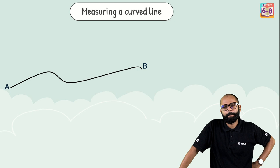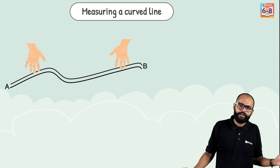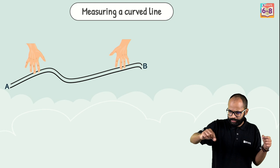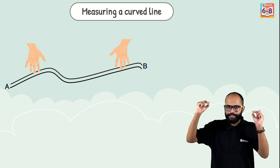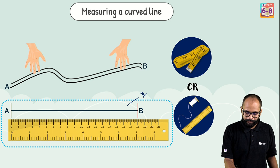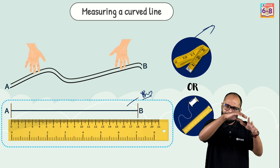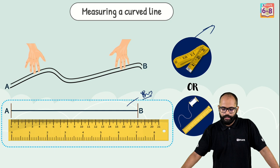How to measure a curved line? Take a thread because threads are flexible. Place the thread along the curved line, mark the endpoints, take the thread off, stretch it out, put it against a scale, and measure the length — for example 18 centimeters. Another way is to use a measuring tape, which is also flexible and can bend around curves, unlike rigid scales.